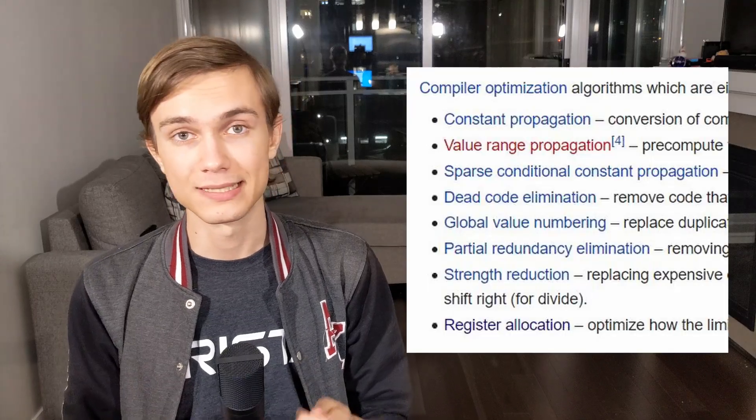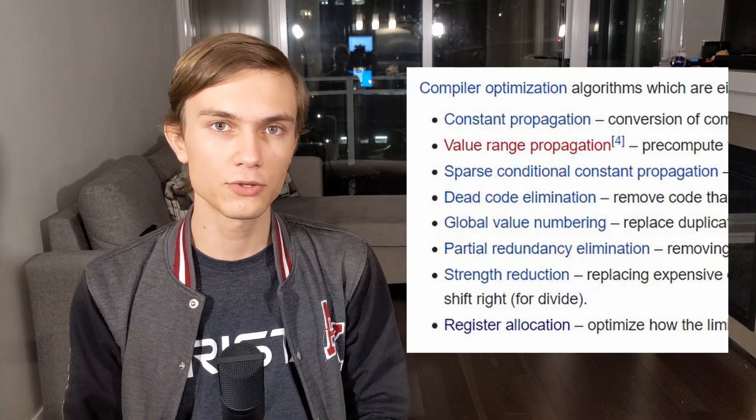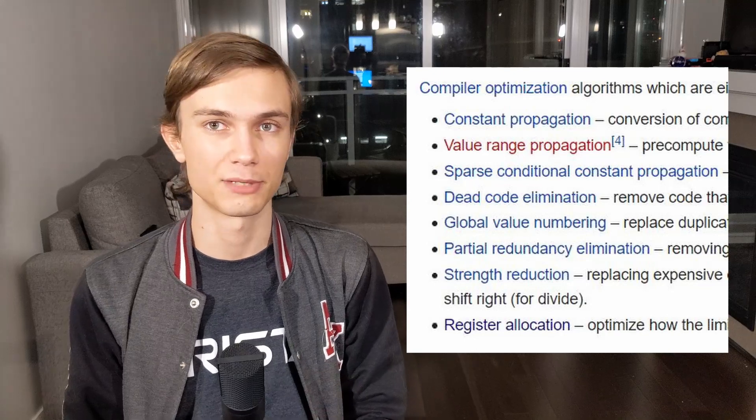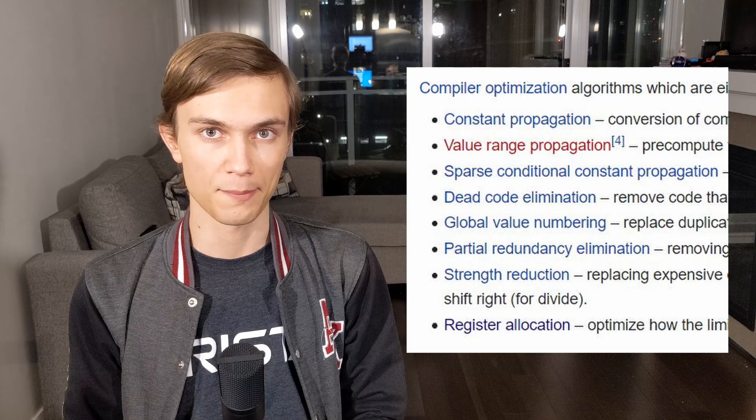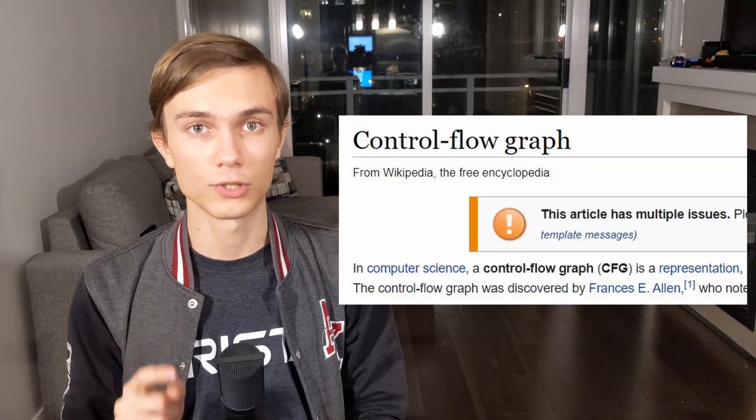The properties of SSA make it significantly easier to analyze code. Here is a quick list of optimizations and operations that benefit from SSA: constant propagation, dead code elimination, global value numbering, partial redundancy elimination, strength reduction, and register allocation. Now I need to talk about the bread and butter of backend optimizations: the control flow graph.